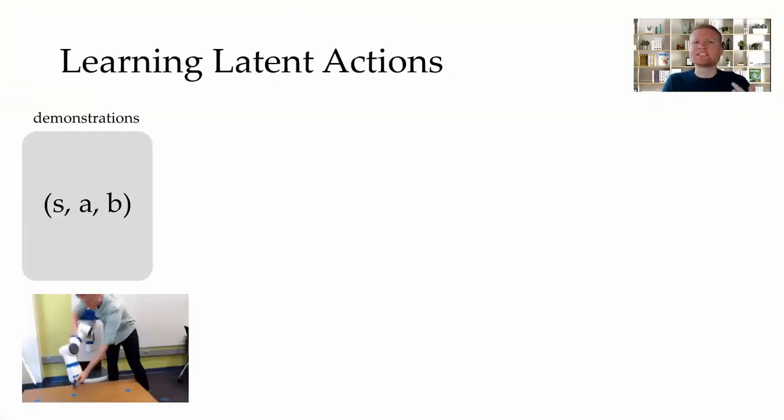We propose incorporating this belief within a learned embedding that maps low-dimensional human inputs to high-dimensional robot actions. Let S be the robot's state, A be the robot's high-dimensional action, and B be the belief.